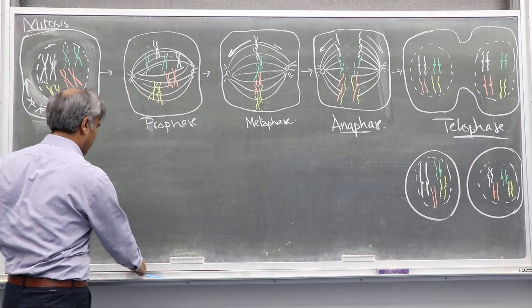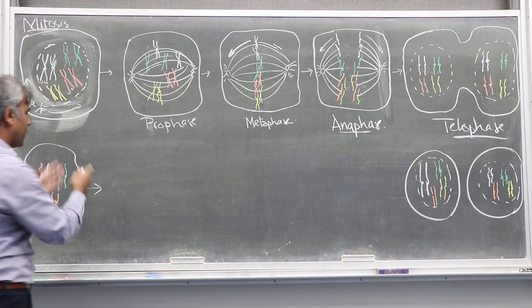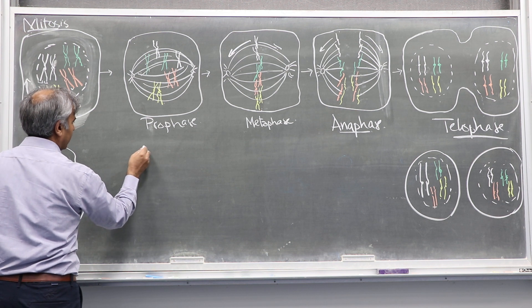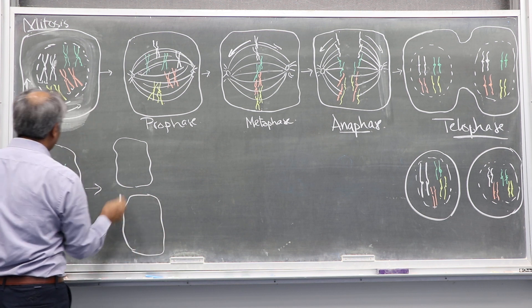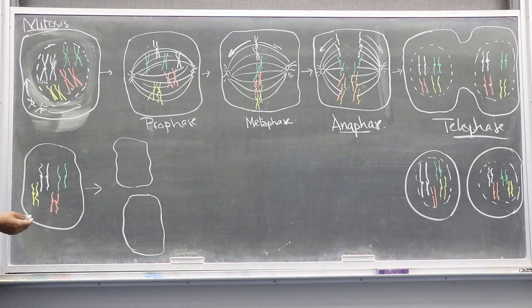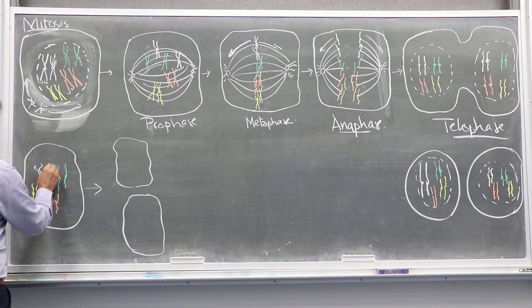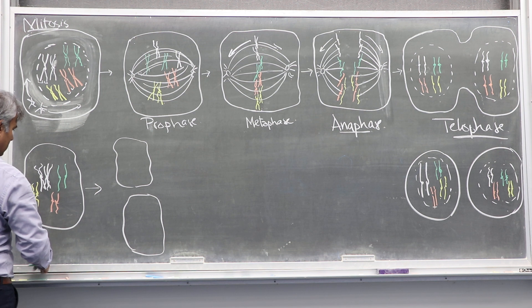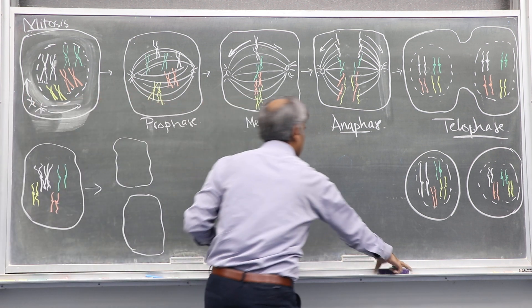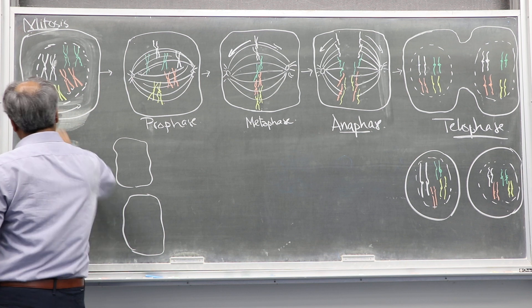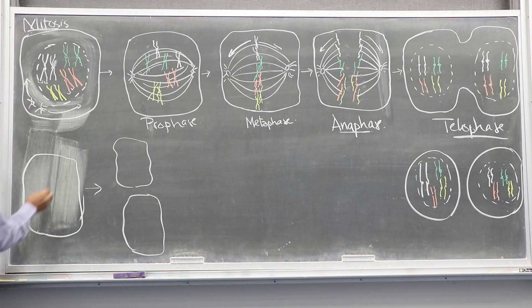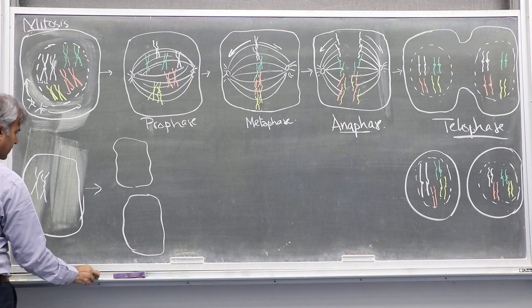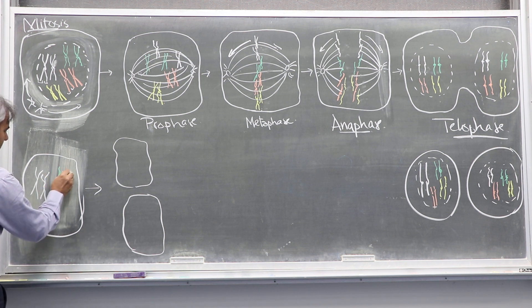Just like in prophase and metaphase and anaphase, in meiosis I, what is going to happen is you are going to have production of two cells. And in those two cells, what has happened — so this is one pair of homologs and this is one pair of homologs.